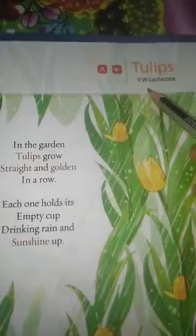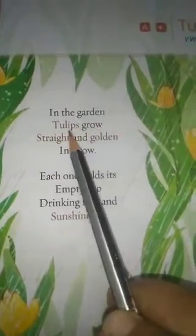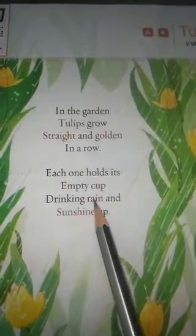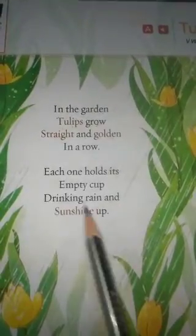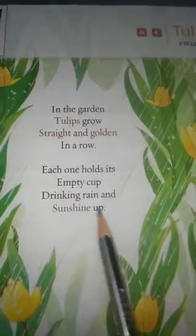The name of the poem is Tulips, and the poet who wrote this poem is V.W. Lachicotte. Let's start. In the garden, tulips grow straight and golden in a row. Each one holds its empty cup, drinking rain and sunshine up.